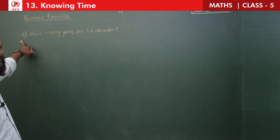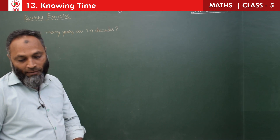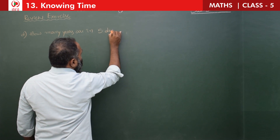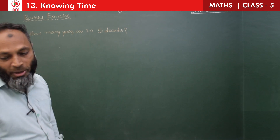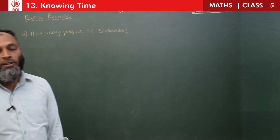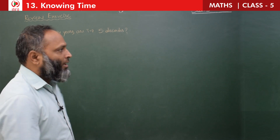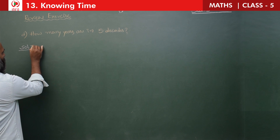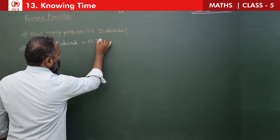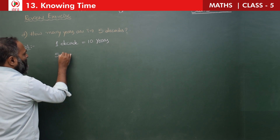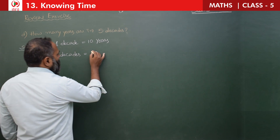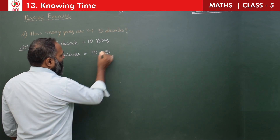The fourth question: how many years are in 5 decades? We know 1 decade equals 10 years. So in 5 decades: 10 × 5 = 50 years.